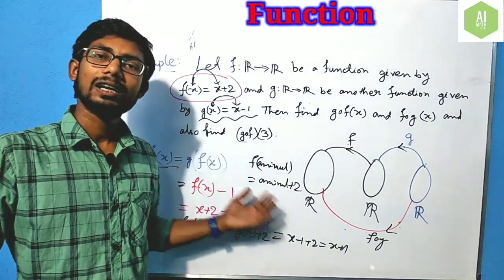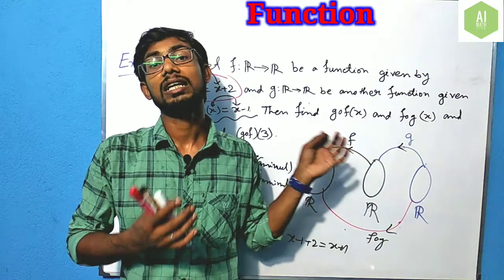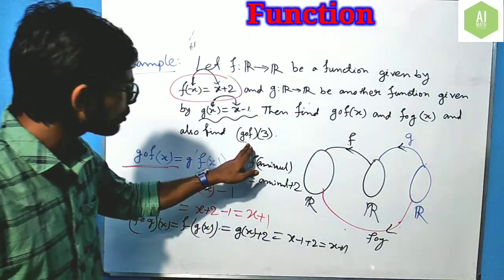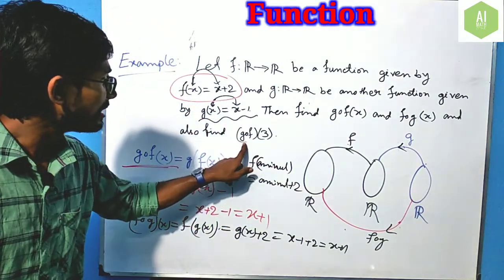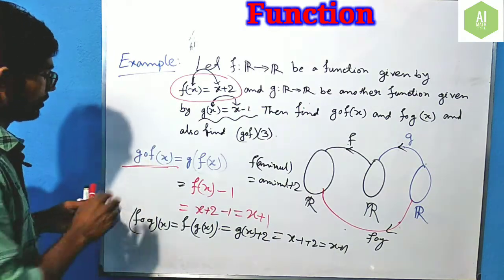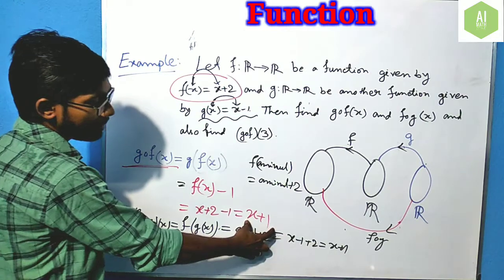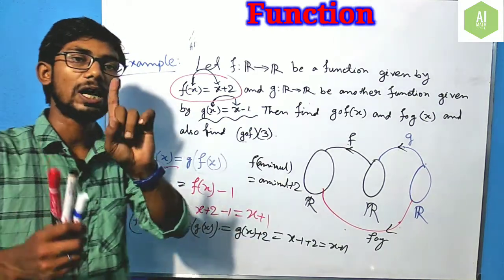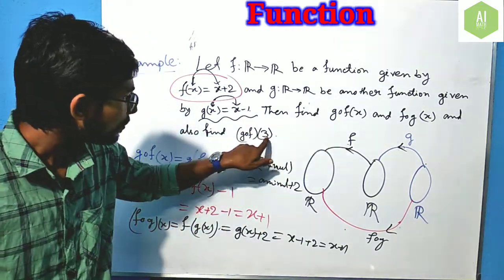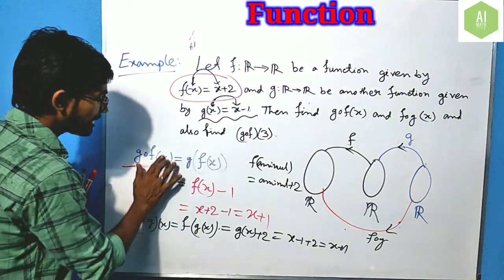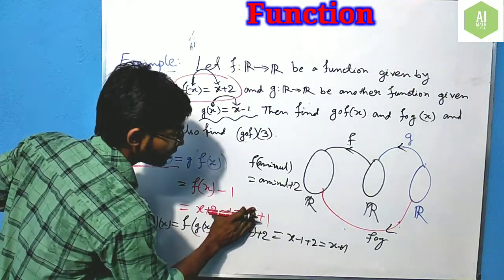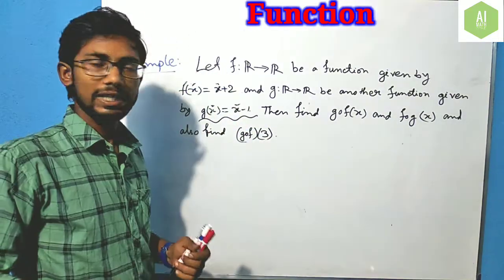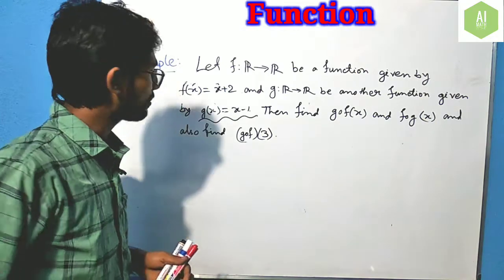But this does not mean they will be the same in every case — there are many examples where they are not equal. Also, there is another question: find g of f of 3. Since g∘f of x equals x + 1, for x = 3 we just write 3 + 1, which equals 4. So g∘f(3) = 4.